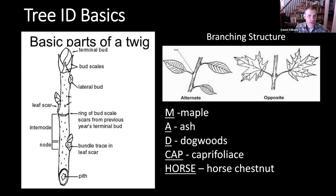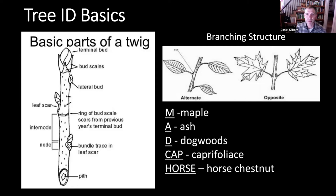The next thing we want to focus on is branching pattern or branching structure. This is important, especially if you're looking at saplings. Buds and leaves are arranged on a branch in a certain pattern. They're either opposite, which means they're located directly across from one another, or they're alternate, which means they're staggered along the twig. Some species of trees have an alternate pattern, others have the opposite pattern. They never switch — it's always the same for each species.